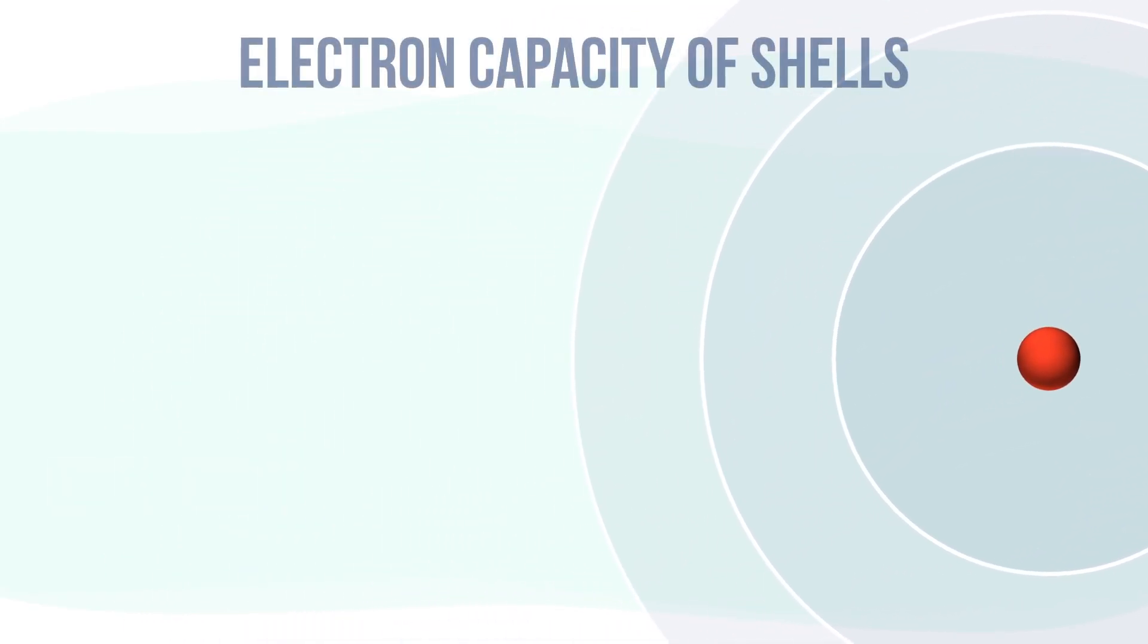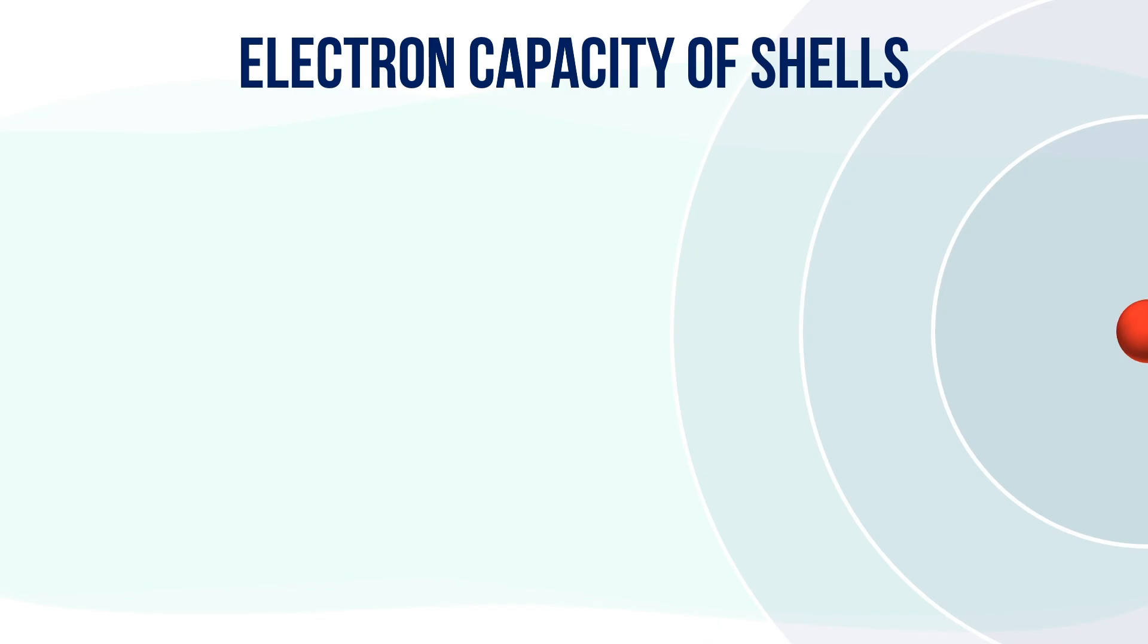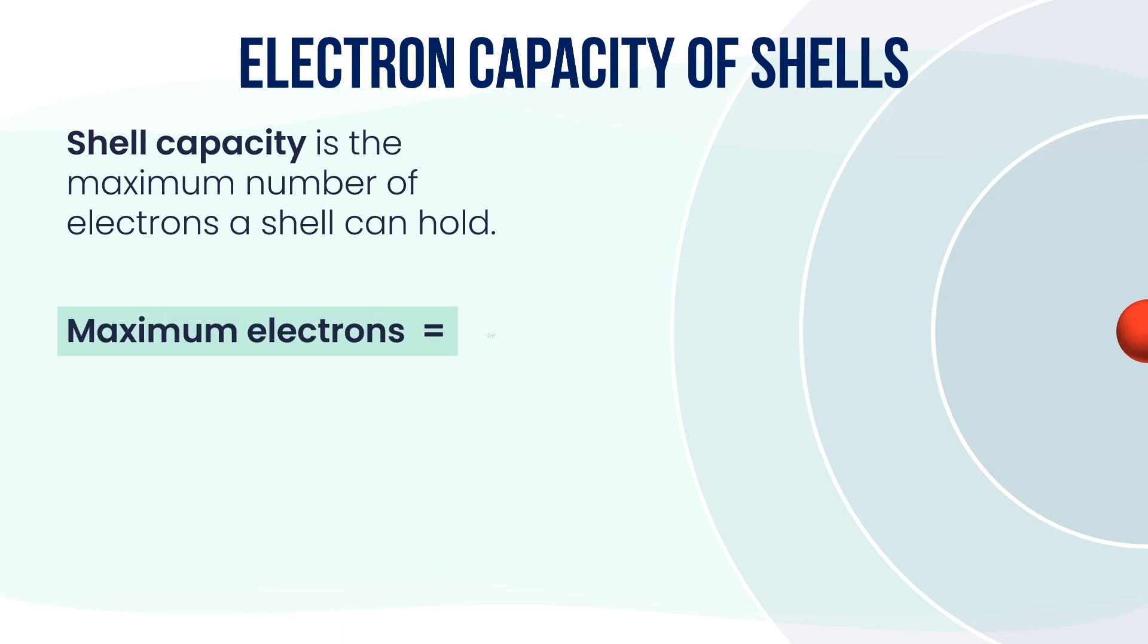Each shell can only hold a certain number of electrons. This is called the electron capacity of a shell. To find out how many electrons a shell can hold, we use this formula: maximum electrons equals 2N squared, where N is the shell number or energy level. Let's try computing it. For the first shell, N equals 1: 2 multiplied by 1 squared equals 2 electrons.